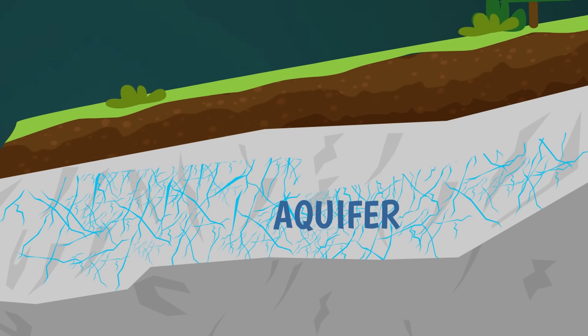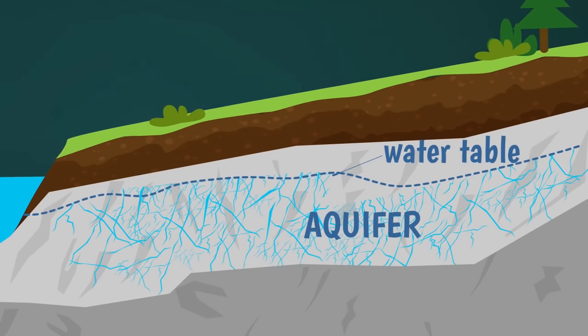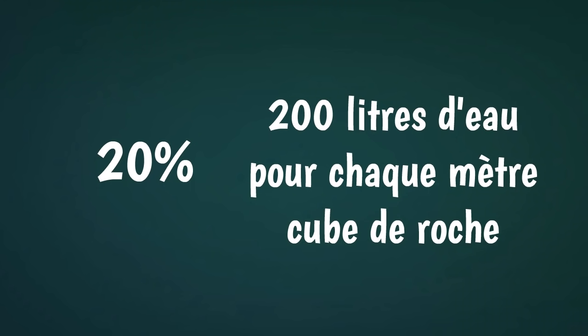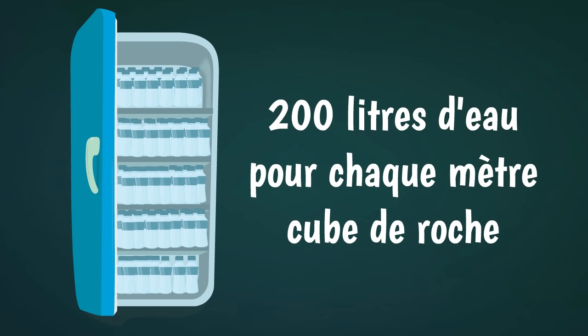The uppermost level in which the pores contain water is called the water table. Rocks between the water table and the base of the aquifer can contain more than 20% of their volume of water, which means that more than 200 litres of water can be stored in each cubic metre of rock. A cubic metre is more or less the size of a fridge.